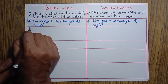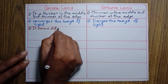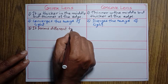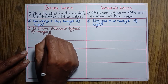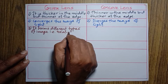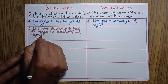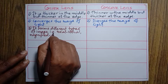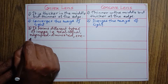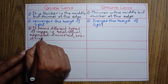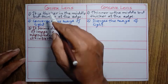It means a convex lens forms different types of images. The image may be real or virtual, magnified or diminished, erect or inverted. This is the conclusion of image formation by a convex lens.